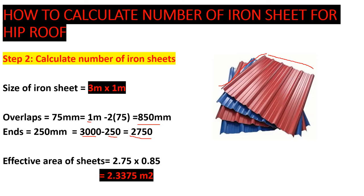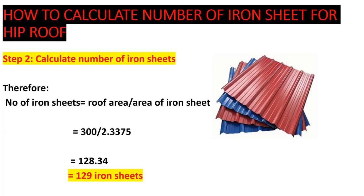With the effective area and the total roof area, we can calculate the number of iron sheets. Number of iron sheets = roof area ÷ effective area of one sheet = 300 ÷ 2.3375 = 128.35, which rounds up to 129 iron sheets. You can allow for a wastage percentage — say 5% — depending on your preference. That is how to calculate the number of iron sheets. Thank you guys for your time and support — until next time, bye bye!